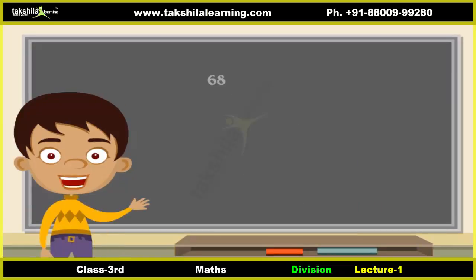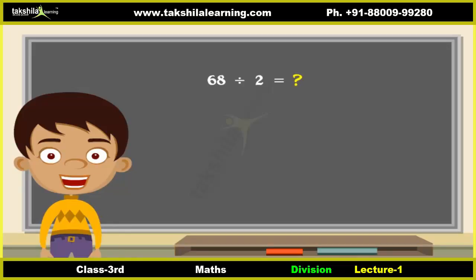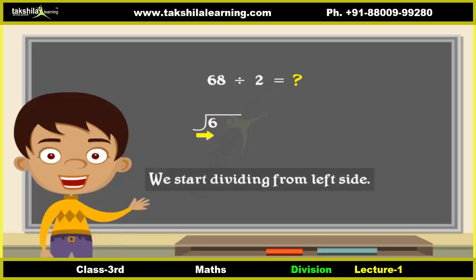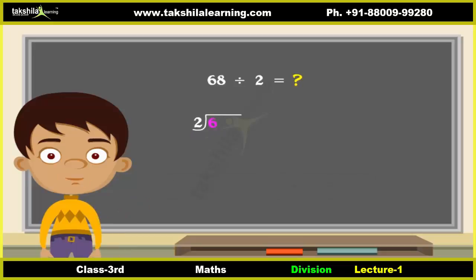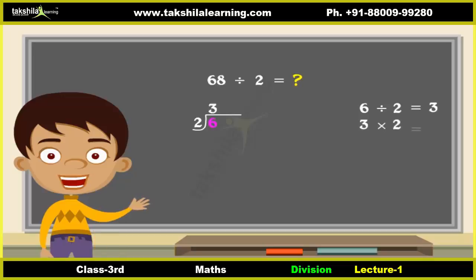We will now divide sixty-eight by two using the long division method. For this we write sixty-eight divided by two as shown on screen. Look at the first number from the left side in sixty-eight — it is six. We start dividing from the left side. First we divide six by two: six divided by two is three. So we put that three right above the six. Now multiply three and two and put the answer right under the six.